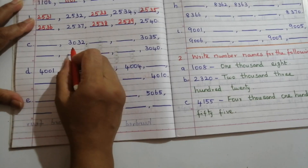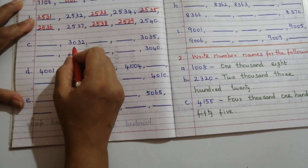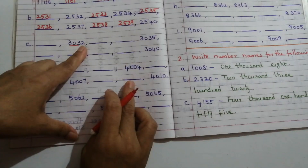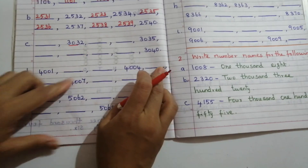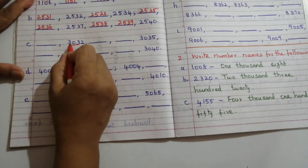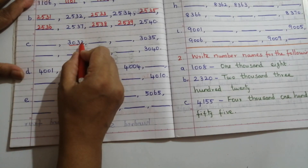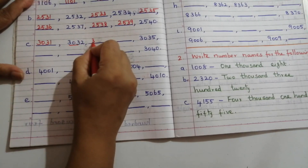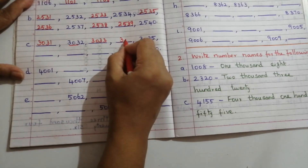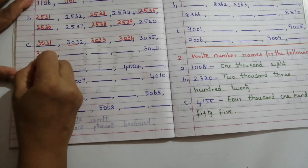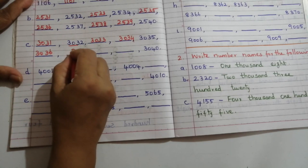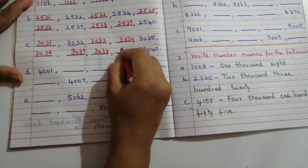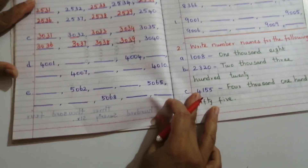In Problem C, there is also no change in the first three digits except the last digit — changes occur only in the ones place value. So the sequence is: 3031, 3032, 3033, 3034, 3035, 3036, 3037, 3038, 3039, and 3040.